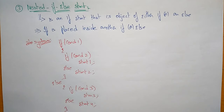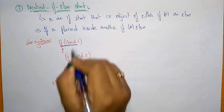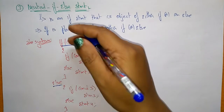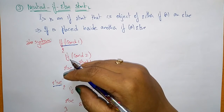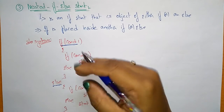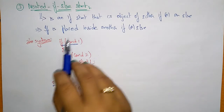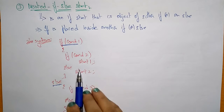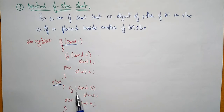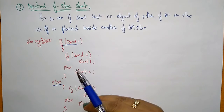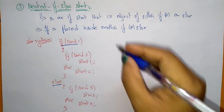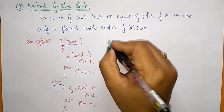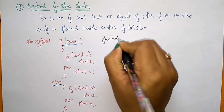So nested if-else means: inside one if, another if statement is also present. If more than one if statement is present inside an if or else condition, you call it nested if-else. Here, inside the if, another if is there, and for the else condition also, another if and else statement is there. So nested means more than one if-else present inside another if-else statement. Let me write the flowchart for this.